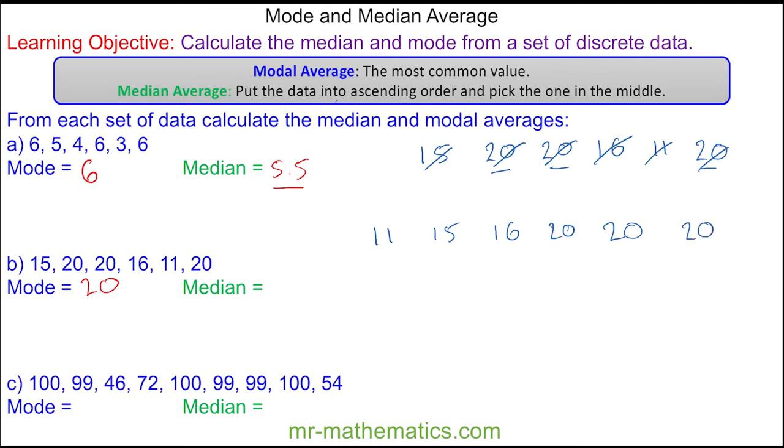Again, to work out the median, I'll cross off the smallest and the biggest, and I will zoom in on the median, which is halfway between 16 and 20. Between 16 and 20 we have 17, 18, 19, and 20. We'll cross off the smallest and the biggest again, and you can see 18 is the median.